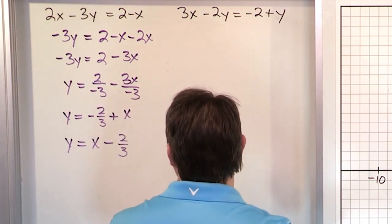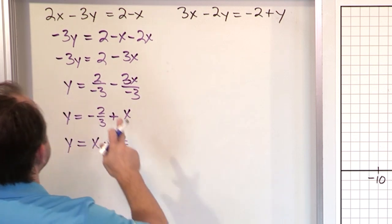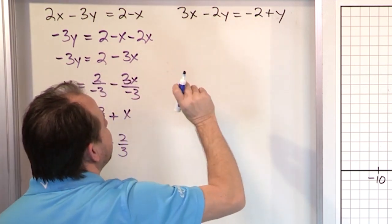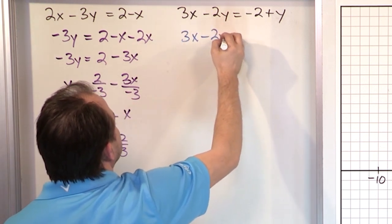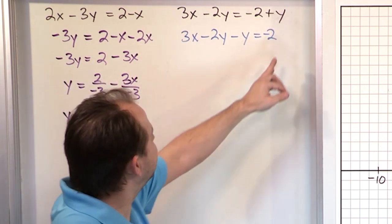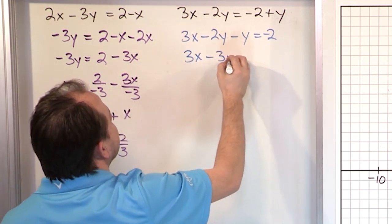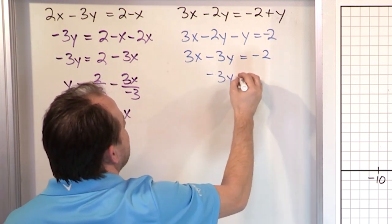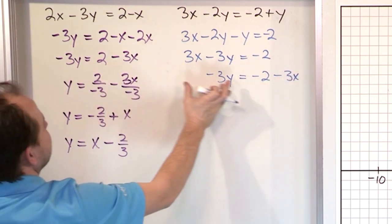Now let's look at what the second equation is doing. This one's a little different because here we had x and x and only one y term, but here we actually have two y terms. So the first thing I'm going to do is move this y over to the left. Leave the x's alone - we have minus 2y. We'll subtract this y: subtract y from the right and also from the left. So what we will have is 3x minus 3y is negative 2. Now we'll take the x term and move it over. So we'll have negative 3y equals negative 2 minus 3x.